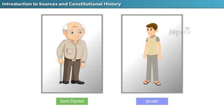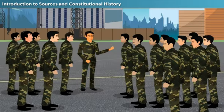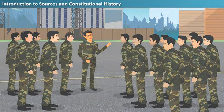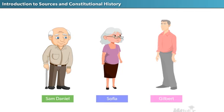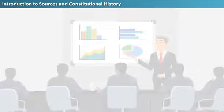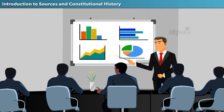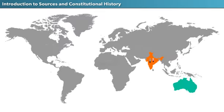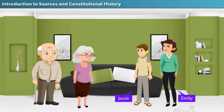Sam Daniel is a distinguished major general of the Indian Army who spent three decades serving the people of India. His wife is Sophia and his son is Gilbert. Unlike his father, Gilbert chose to be a businessman and started a business in Australia. He became so successful that he couldn't spend much time with his family. So after retirement, Sam Daniel and Sophia shifted to Australia to take care of their daughter-in-law Emily and grandson Jacob.